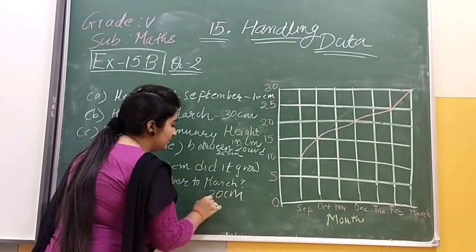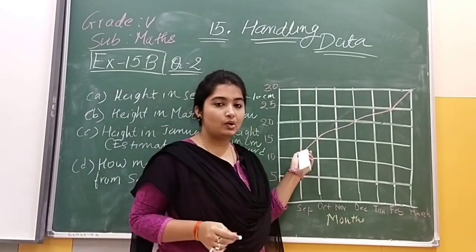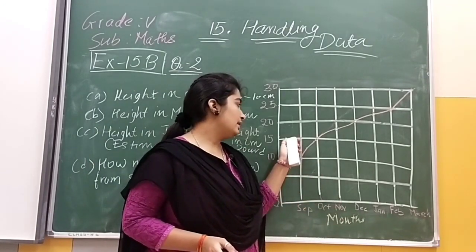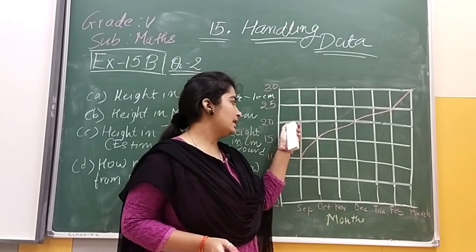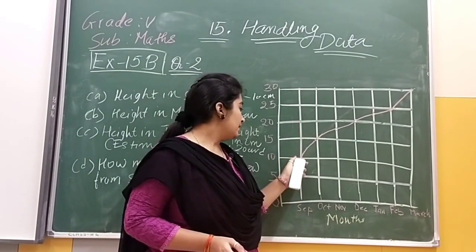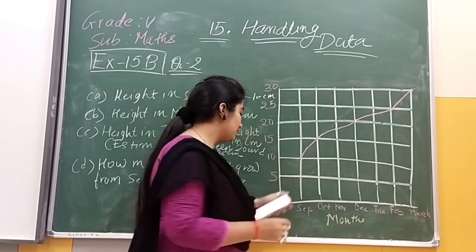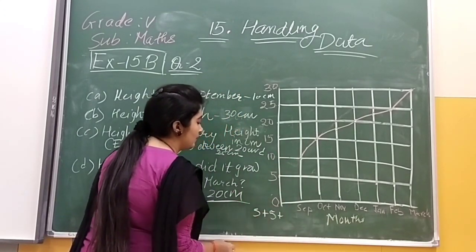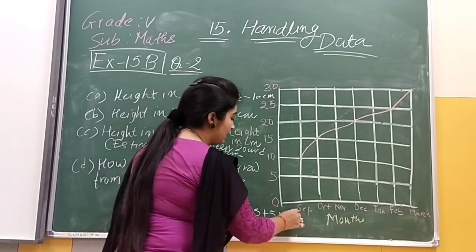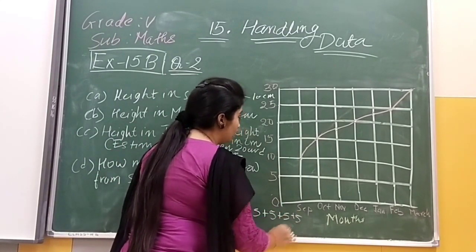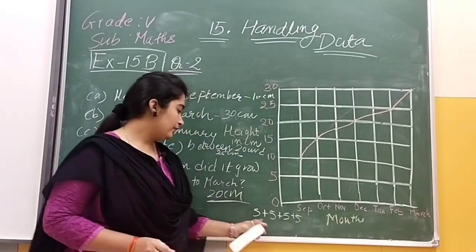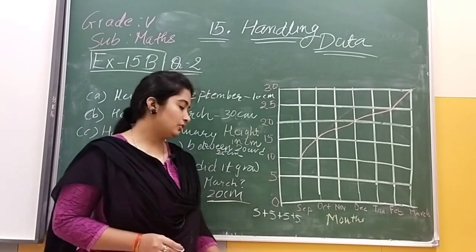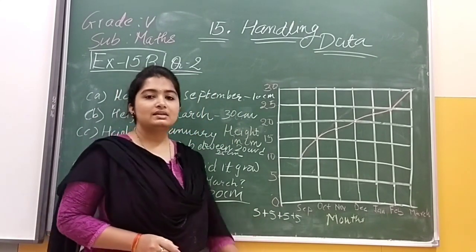20 centimeter kyun aaya? Yahan pe 10 thi — already pehle se 10 centimeter ka plant tha. Usme 5 add kiya to 15, again 5 add kiya to 20, again 5 add kiya to 25, and again 5 add kiya to 30. Kitni baar 5 add kiya? That is 4 times. 5 times 4 is 20. So our answer will be 20 centimeter.